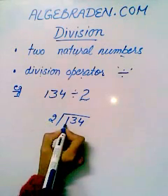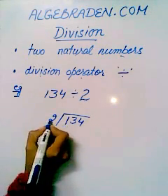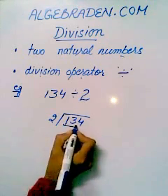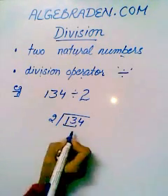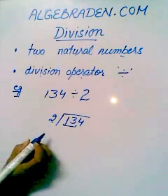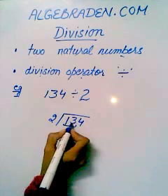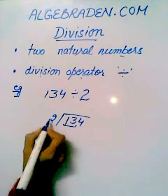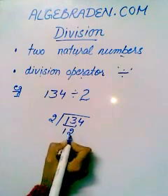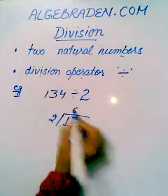We should start from the leftmost digit. As 1 is not divisible by 2 and it is smaller than 2, we take the first two digits. Now, 13 is not divisible by 2, so we have to find the smallest nearest number to 13 which is completely divisible by 2. That number is 12, which is completely divisible by 2 at 6.